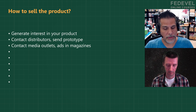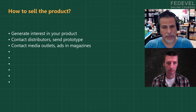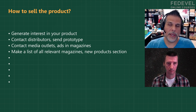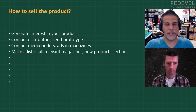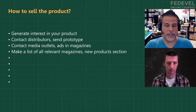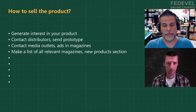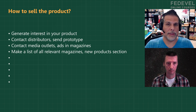Another thing to do when the product is ready: make a list of every magazine possible that talks about your kind of product. Most of these magazines have a new products section — a little bit of copy or text describing the product, maybe a picture. You can contact the editors and say, I have this new product coming out or it's already out. Give them some copy, describe it, a picture, and if you're lucky they'll put it in the new product section of their magazine. That's free.